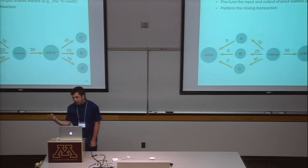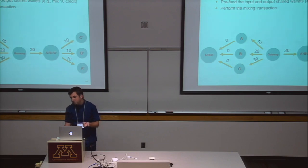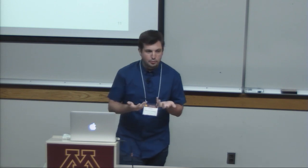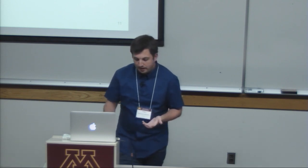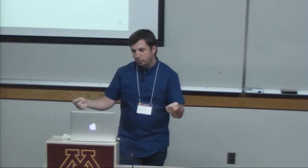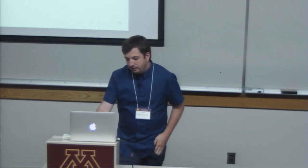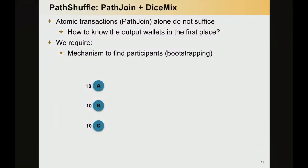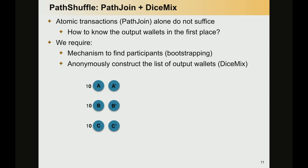This is PathJoin — how we perform atomic transactions in the Ripple network. This is the main building block in our protocol. But as you can imagine, this alone doesn't suffice to have anonymous payments in the credit network. The main remaining problem is that we have to come up with a way to generate the list of output wallets. For that, we first require a mechanism to find participants who want to participate in our path shuffle mixing mechanism.